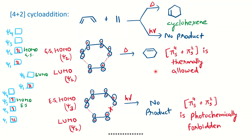To summarize: 2+2 cycloaddition is photochemically allowed, while 4+2 (Diels-Alder) is thermally allowed — they are opposite to each other. In the next video we will learn about the Diels-Alder reaction, its stereochemistry, feasibility, and endo-selectivity. Happy learning!